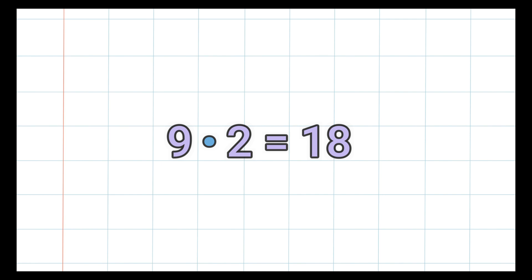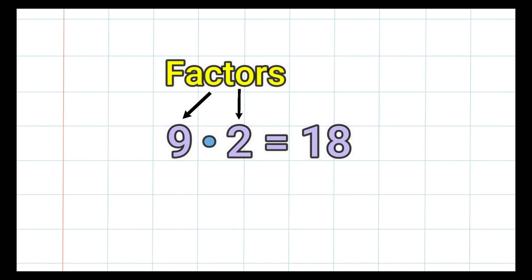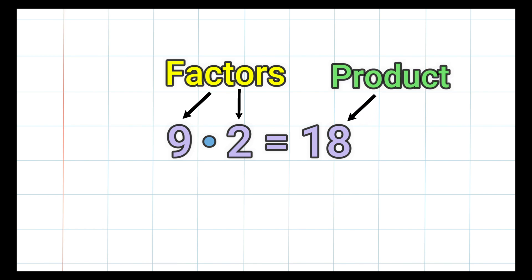The 9 and the 2 are called factors. Factors are the numbers that we are multiplying. 18 is called the product. The product is another way of saying the answer to a multiplication problem.